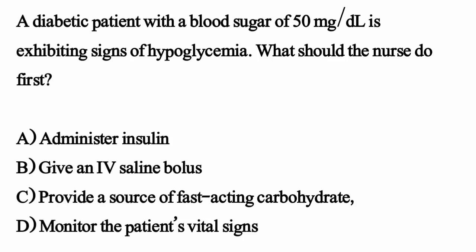A diabetic patient with a blood sugar of 50 mg/dL is exhibiting signs of hypoglycemia. What should the nurse do first? The correct option is option C: Provide a source of fast-acting carbohydrate.